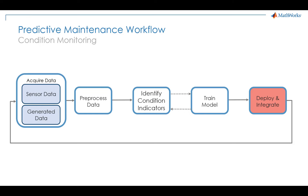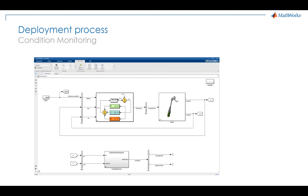So let me show you exactly what we're going to do next. We're going to start from this model, and then we will automatically generate code from the classification algorithm that we will bring to Simulink through a MATLAB function block. We leverage code generation and deploy the algorithm on a PLC.